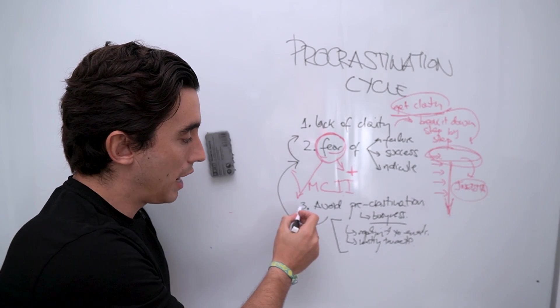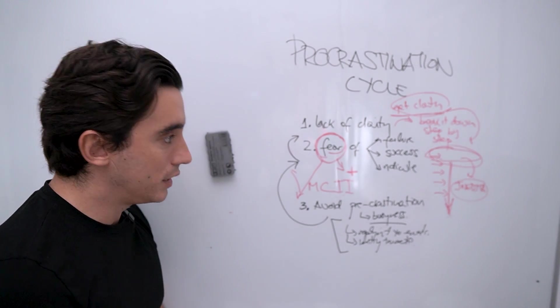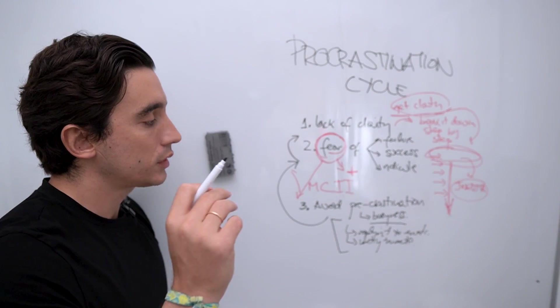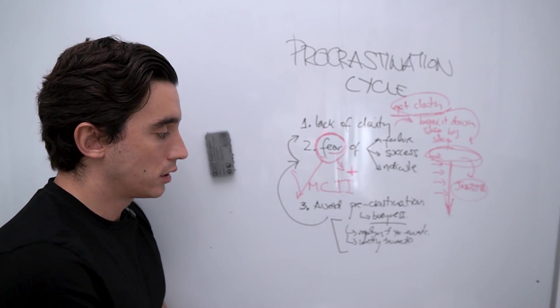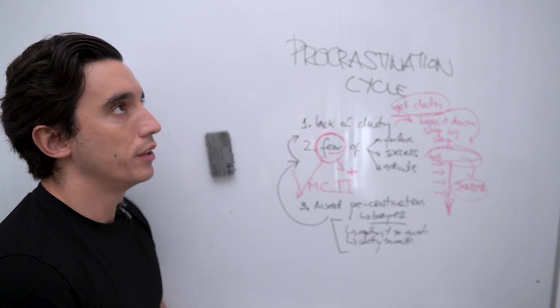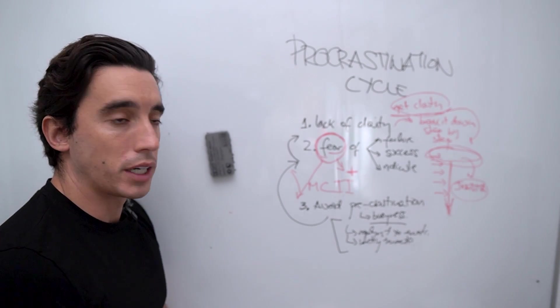So the solution here is to have a procrastination list, a set of activities that you know you tend to do when you don't want to do the hard things. They typically have to do with communication and low investment marketing strategies.